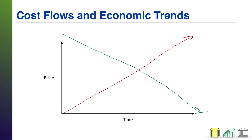My red arrow is inflation and my green arrow is deflation. This is all economics — so what does this mean in terms of accounting for inventory cost flows? I'm going to set aside specific identification for now. This is more about the various cost flow assumptions companies make: FIFO, LIFO, and average cost — first in first out, last in first out, and average cost.